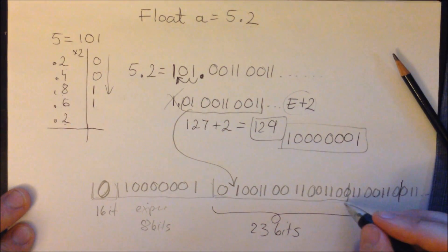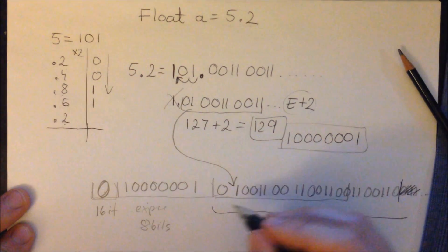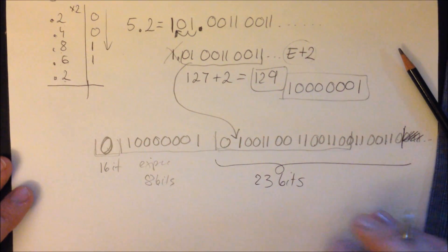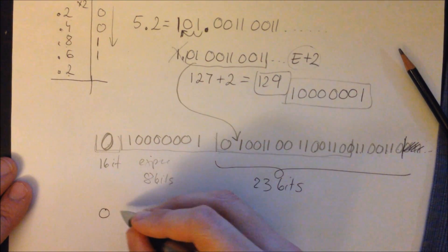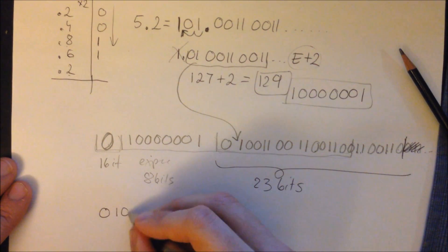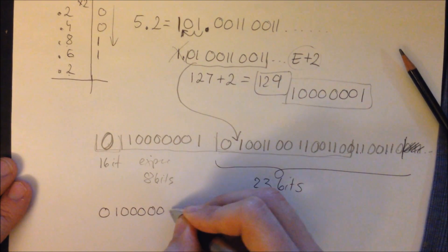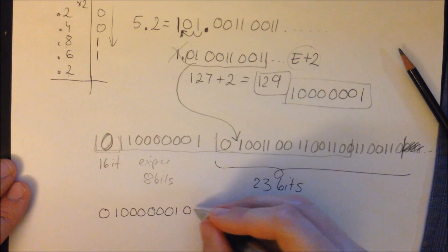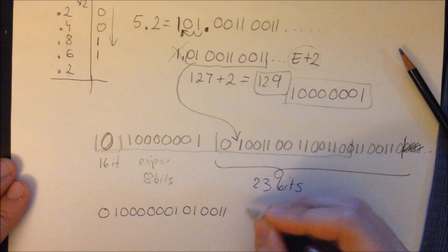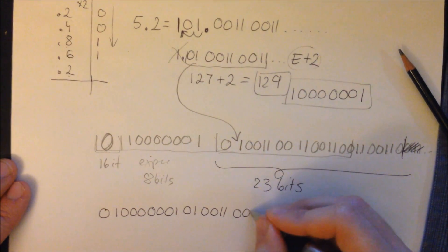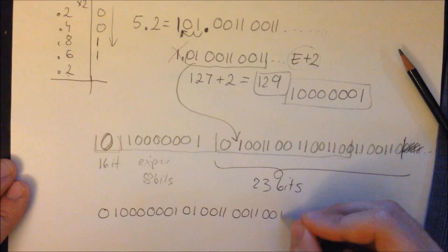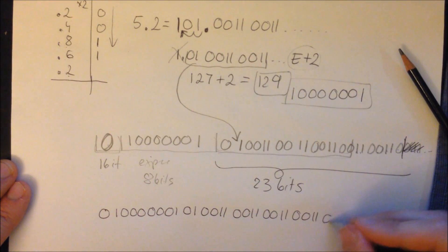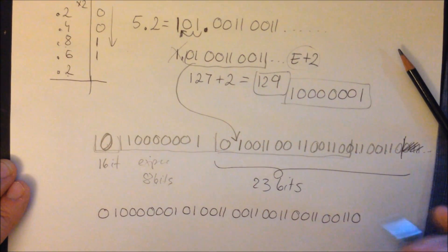So the number continues beyond the 23 bits, and we discard the rest. Let's rewrite the full floating point number one more time: 0 (sign), then 10000001 (exponent), then the fraction 01001100110011001100110.